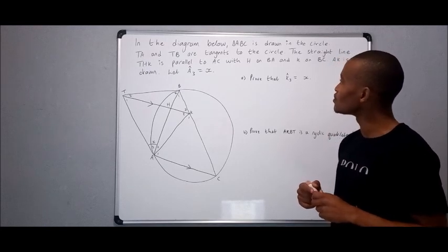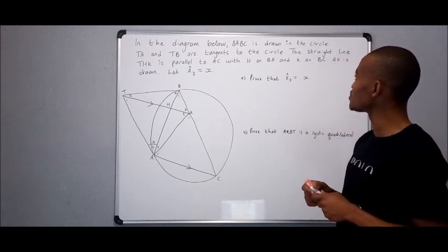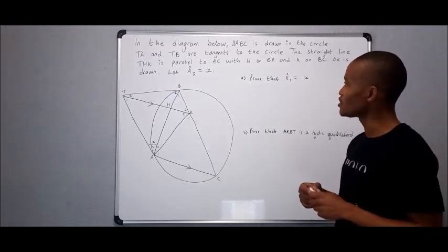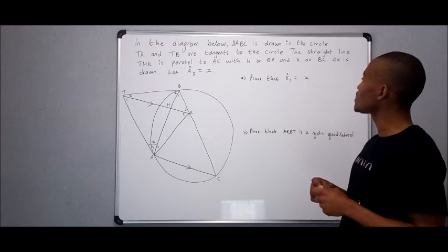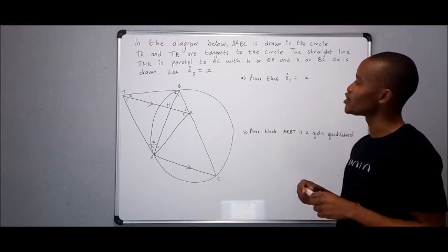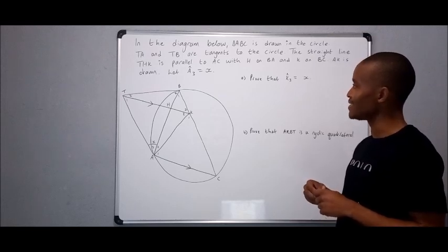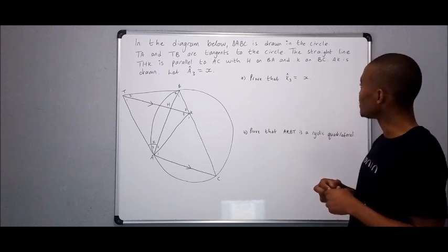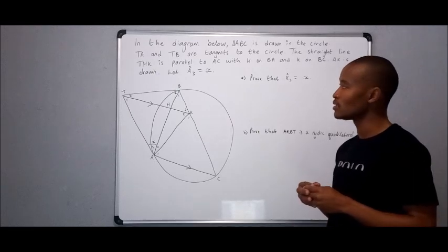In the diagram below, triangle ABC is drawn in the circle. TA and TB are tangents to the circle. The straight line THK is parallel to AC with H on BA and K on BC.